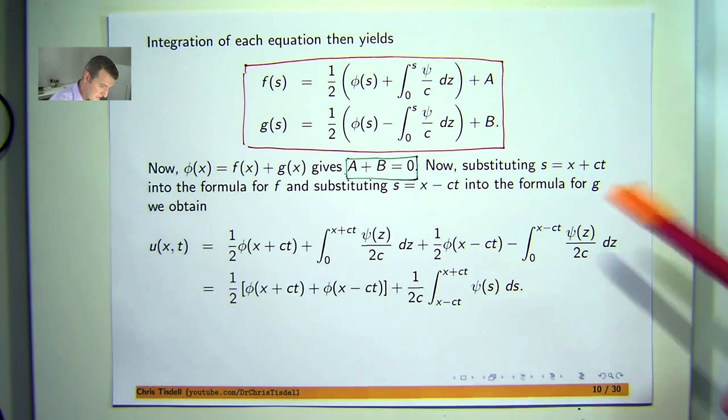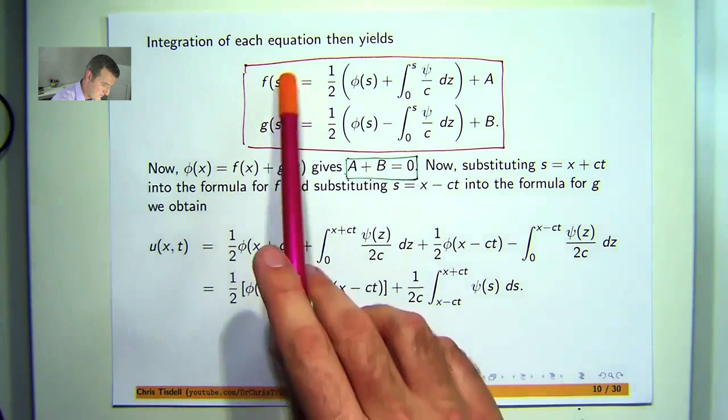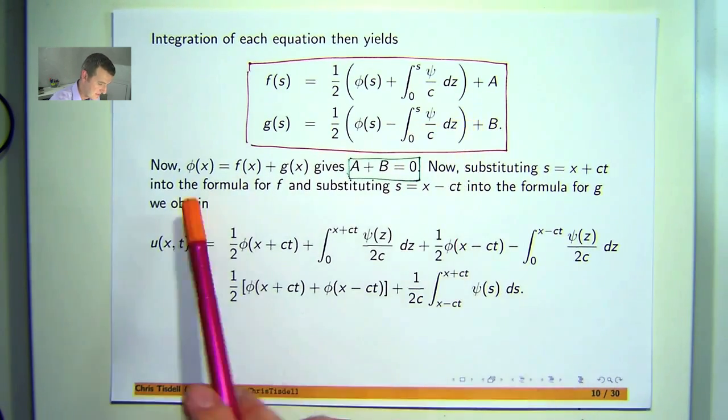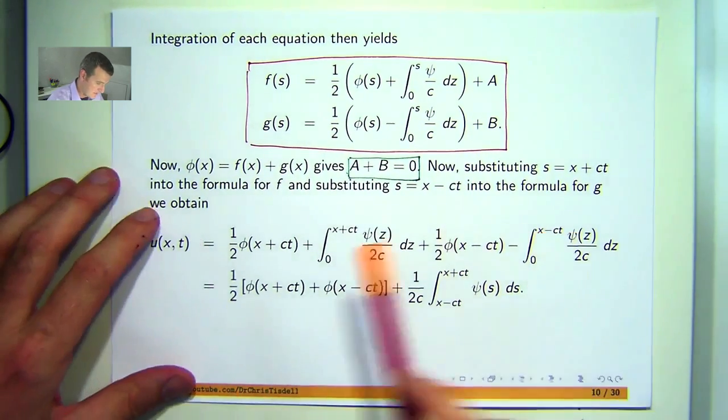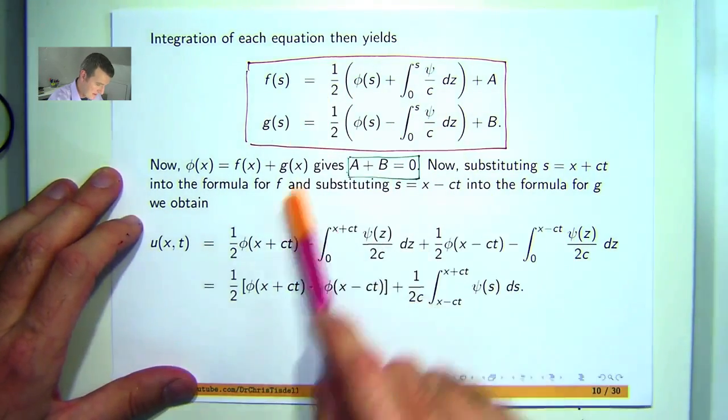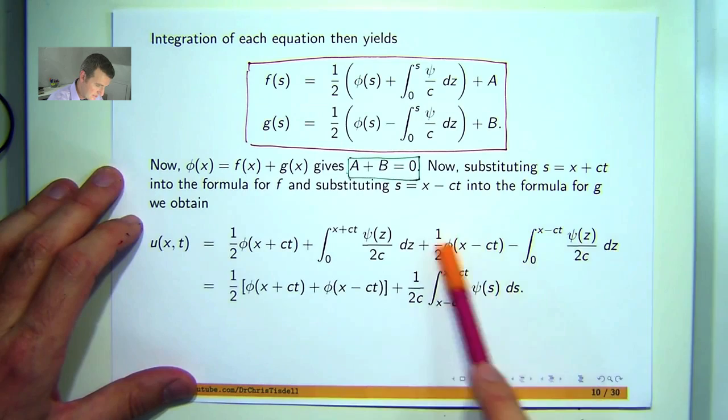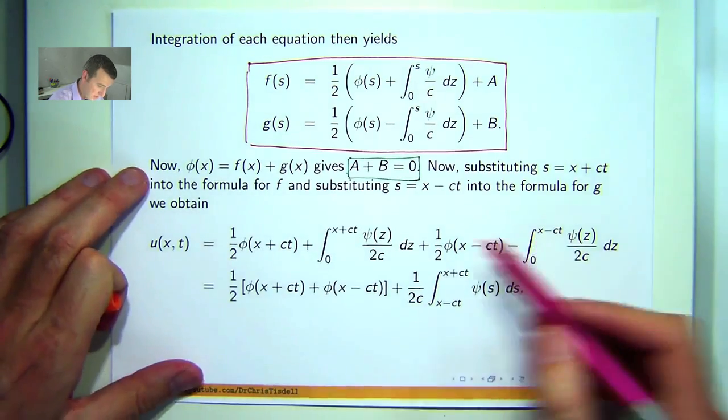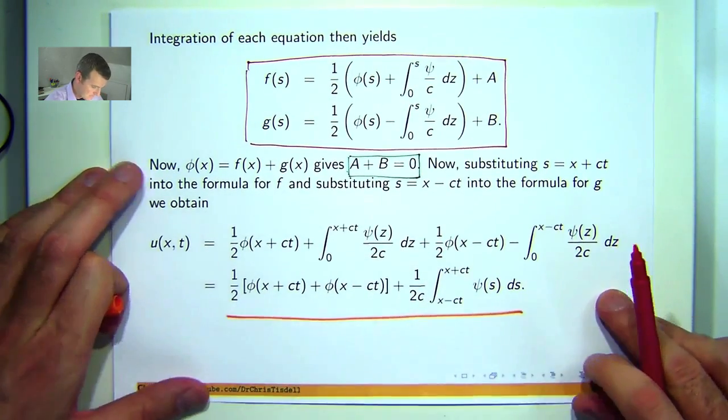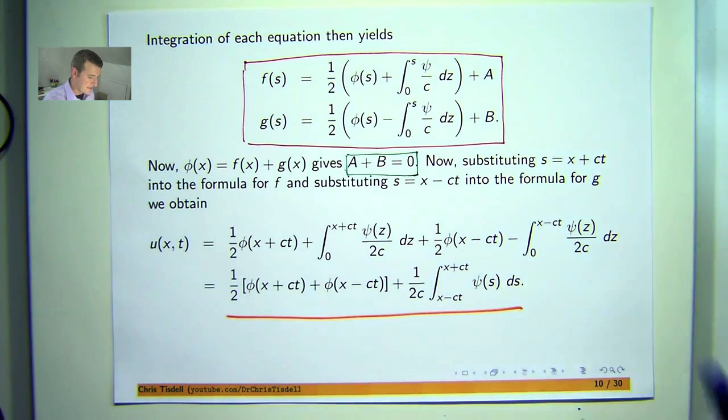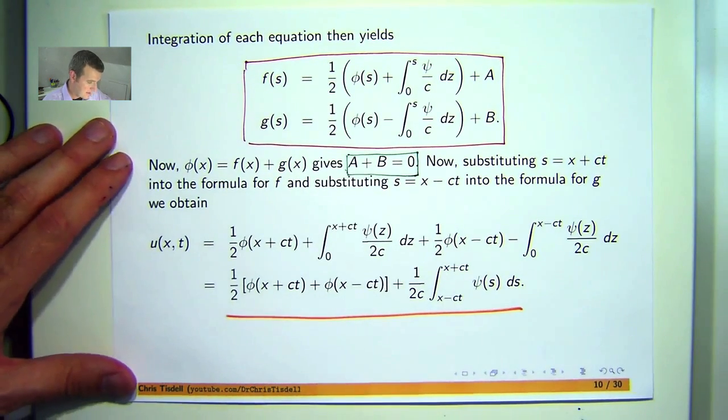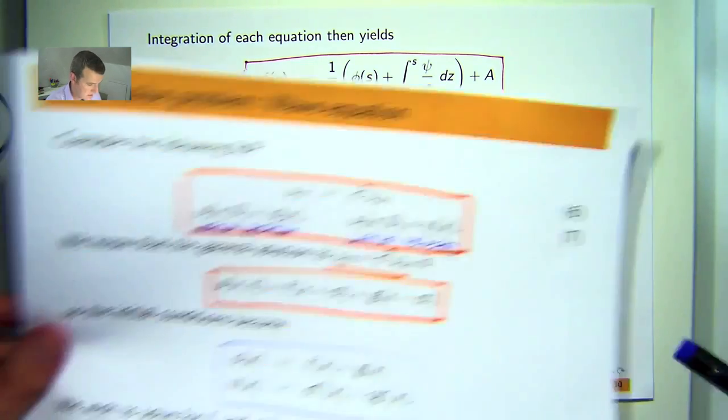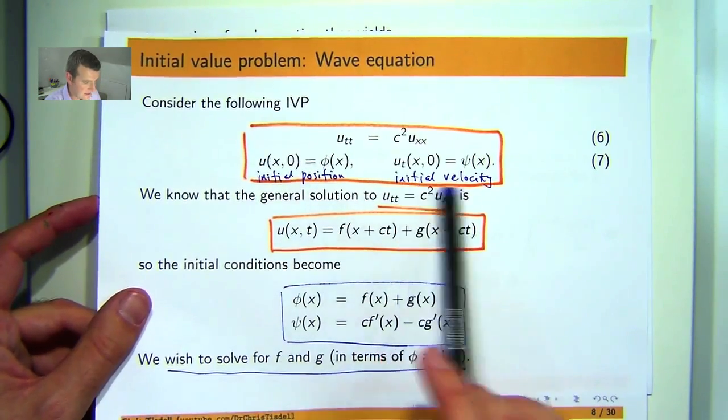All right, well substituting in s equals x plus t for f and substituting in s equals x minus t into the formula for g, then we obtain the following. So this is going to come from your f. This is going to come from your g. And then I can sort of team a few of these up. So I can combine the integral into one expression. This, then, is the general form for the solution to the wave equation with initial position and initial velocity.